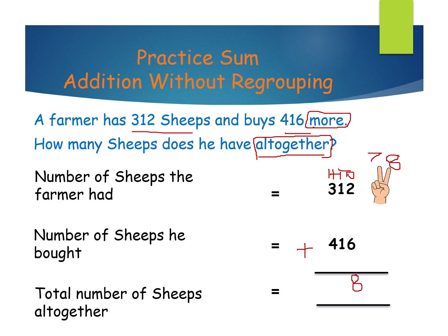Now in the tens place, the digits are 1 and 1. 1 after 2, right? 1 plus 1 equals 2.